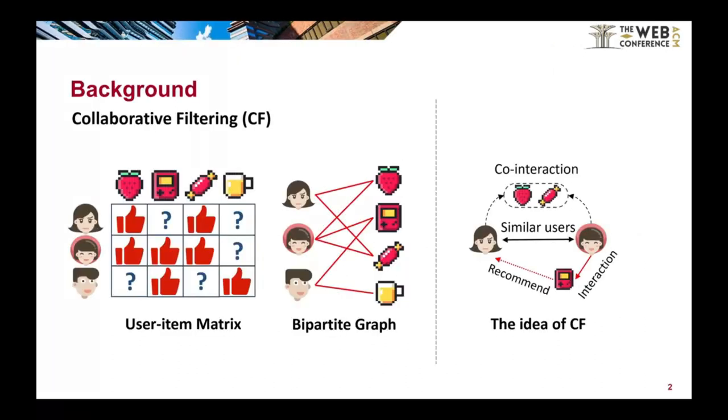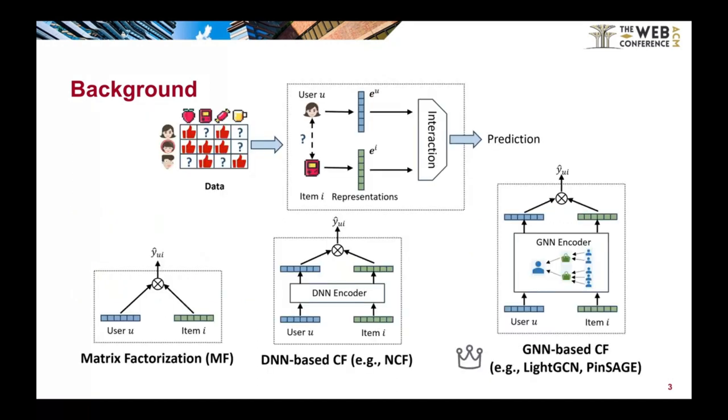Recommended systems are ubiquitous in our daily web experiences. They rely on collaborative filtering, a technique that produces the missing interactions between users and items based on their similarities. Collaborative filtering models use learnable representations of users and items to capture their latent factors, such as user intent, and compute their interactions to predict future user behaviors.